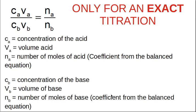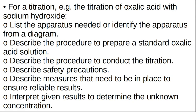Only use the titration formula for an exact titration — not if someone overshot the end point. In the exam guidelines, a typical example is the titration of oxalic acid with sodium hydroxide: you make a standard solution of oxalic acid and have an unknown sodium hydroxide solution. You need to know how to label the apparatus — burette, pipette, Erlenmeyer flask, indicator, volumetric flask — how to make the standard solution, and how to conduct the titration: add the indicator, add solution from the burette quickly at first, then slow down near the end point.